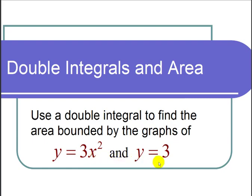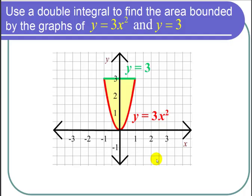So I'm going to start by sketching the graphs. The first is a parabola and the second is a horizontal line. So here's my parabola y equals 3x squared and here's my horizontal line y equals 3. I want the area of the region bounded by these two curves.